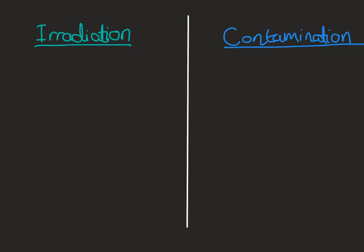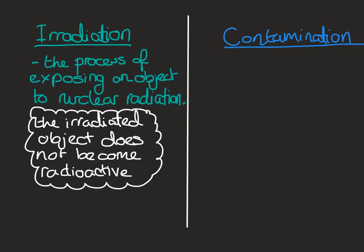Irradiation is defined as the process of exposing an object to nuclear radiation. The really important thing here is that the irradiated object does not become radioactive. So you can be exposed to radiation, and then the source of radiation is taken away, and you're no longer exposed to radiation.